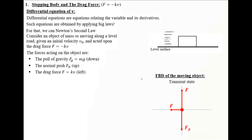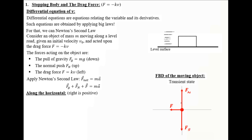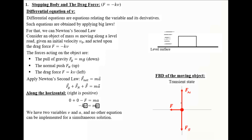Now I will consider the general transient state case and apply Newton's second law: the sum of forces equals MA. We have the pull of gravity, the normal force, and the drag force equal to MA. Considering the horizontal direction with rightward as positive, the pull of gravity and normal force have zero horizontal projections, so the drag force gives us minus KV equals MA. We have two unknowns, V and A, so we need to transform this into a differential equation, since no other equation from the vertical direction will help.